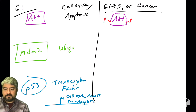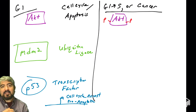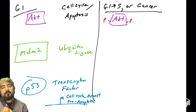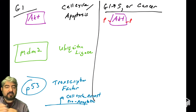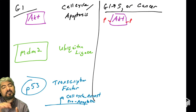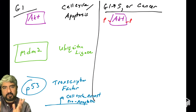MDM2 is a ubiquitin ligase. We're going to talk about ubiquitination in detail later in the course. MDM2 is a type of enzyme that attaches ubiquitin proteins to another protein, conjugating them together — that's why it's called a ligase. Ubiquitination regulates protein stability because ubiquitination of a protein sends it to the proteasome where it can be destroyed.